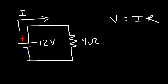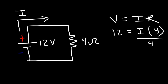V is equal to IR. The voltage is 12, we're looking for the current, and the resistance is 4. So we need to solve for the variable I. Let's divide both sides by 4. 12 divided by 4 is 3, so the current is going to be 3 amps.